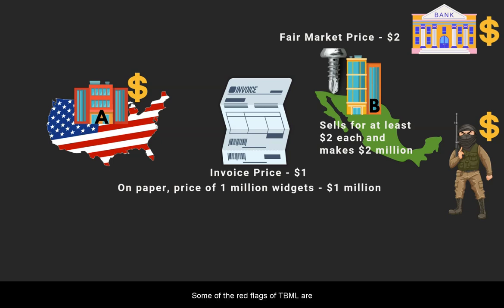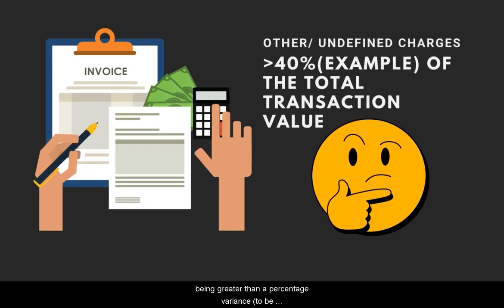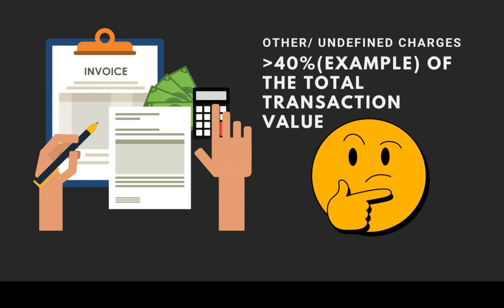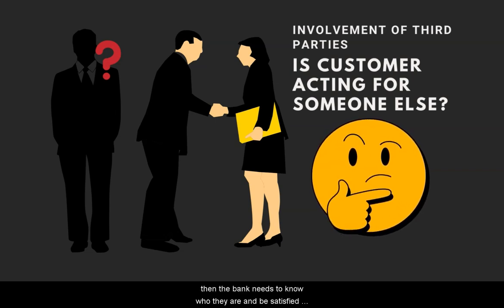Some of the red flags of TBML are: requests that do not seem to make commercial sense, such as selling goods at well below market price; invoices showing other or undefined charges as being greater than a percentage variance of the total transaction value; and the involvement of third parties — if the customer is acting for someone else, then the bank needs to know who they are and be satisfied that they are bona fide.